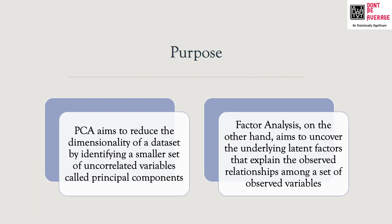Let's look at the purpose of PCA and factor analysis. PCA reduces the dimensionality of a dataset — if you have hundreds of variables, it becomes very difficult to carry forward any data science or data analysis work. This is called the curse of dimensionality. PCA lets you reduce the number of variables without losing a lot of information, down to 10 or 20 or however many you wish. These new variables are called principal components, and they are uncorrelated and explain maximum variance in the data.